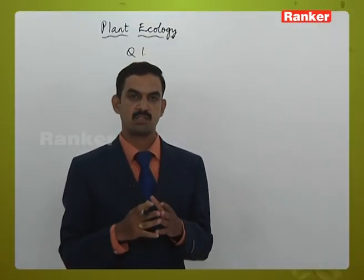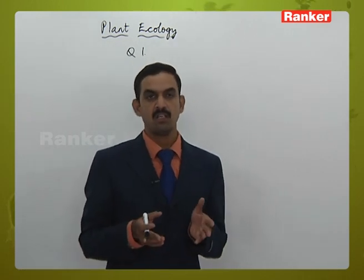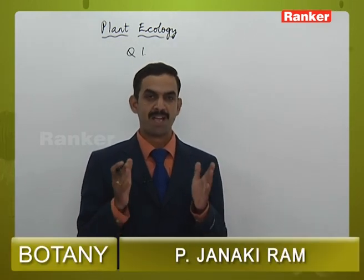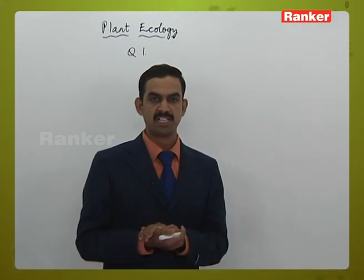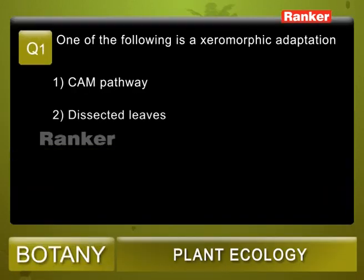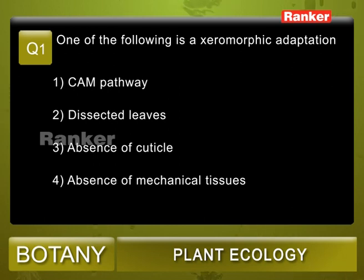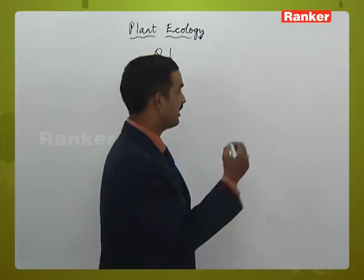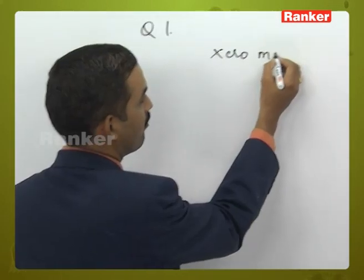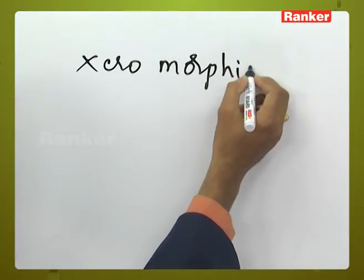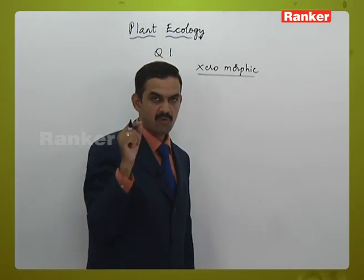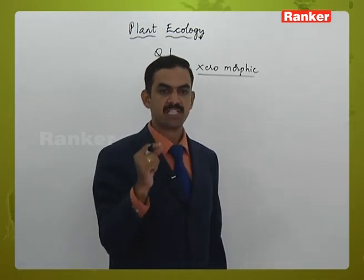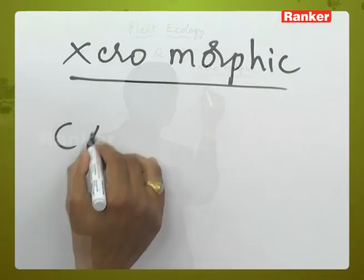Now let's look at expected questions for the MSET exam. Question 1: Which of the following is a xeromorphic adaptation? Options: 1) CAM pathway, 2) dissected leaves, 3) absence of cuticle, 4) absence of mechanical tissue. Xeromorphic means the morphological character adapted by a xerophytic plant. The CAM pathway (Crassulacean Acid Metabolism) is a method of carbon dioxide fixation shown by members of the Crassulaceae family.